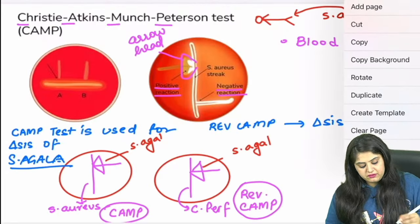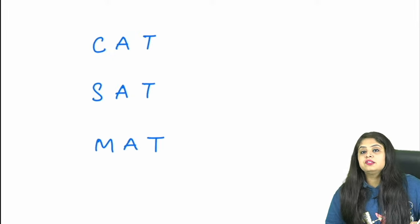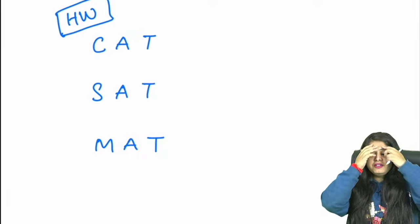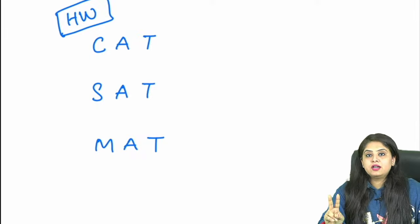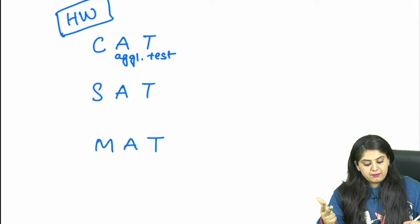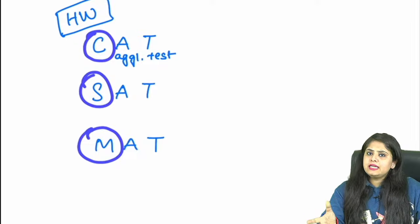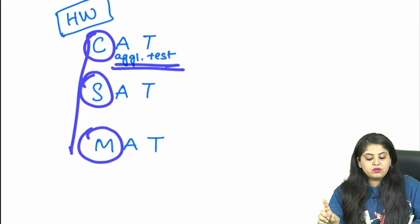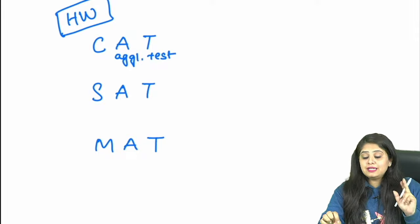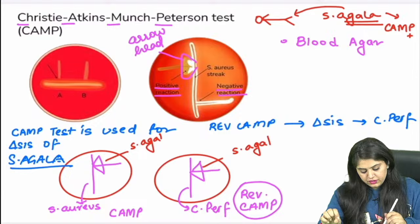The image in the question shows a CAMP test — the horizontal line is agalactiae, the standing line is S. aureus, arrowhead positive. This confirms neonatal meningitis/sepsis caused by S. agalactiae. Homework: 'cat sat on mat' — three organisms showing cold agglutination, standard agglutination, and microscopic agglutination tests (from immunology). We'll cover this next time.